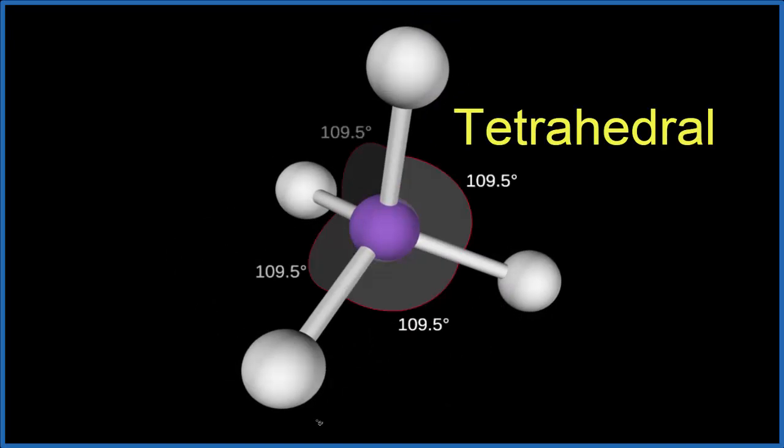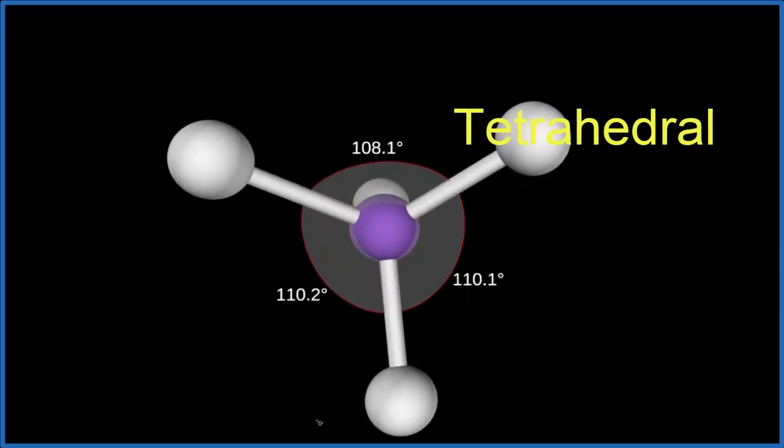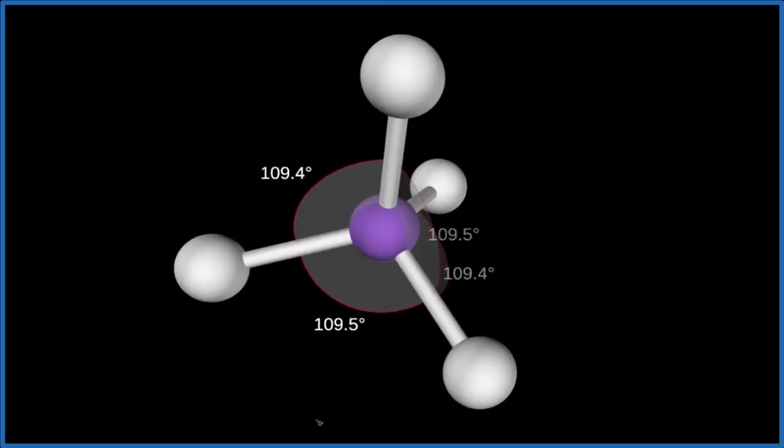If we looked at the bond angles, they would be 109.5 degrees. We wanted to talk about the electron geometry. Since there are no lone pairs on the central atom, it's also tetrahedral.